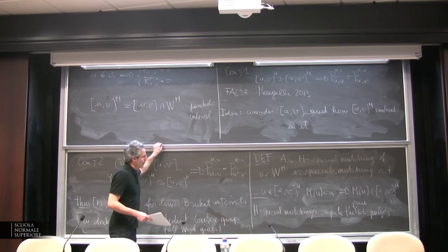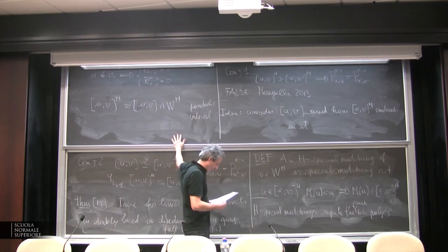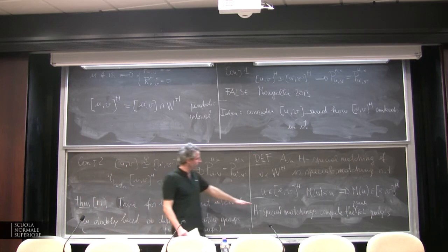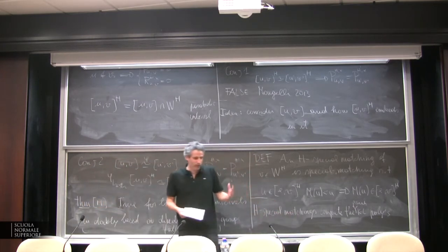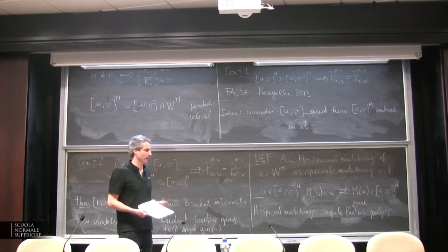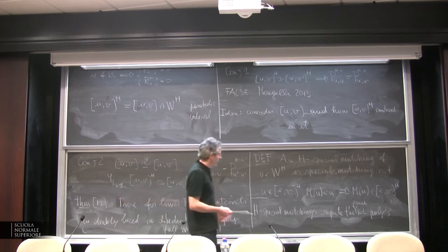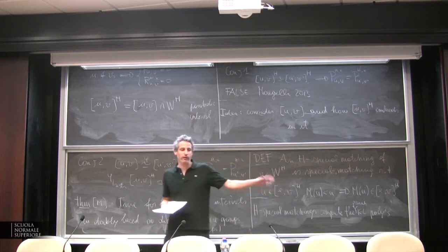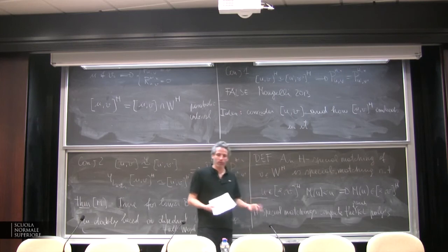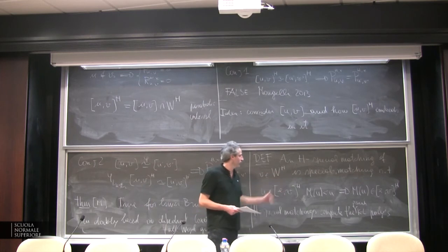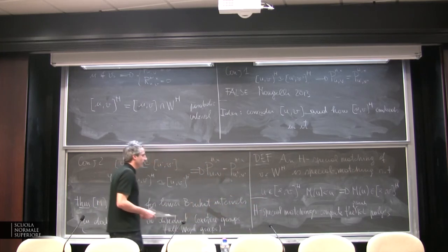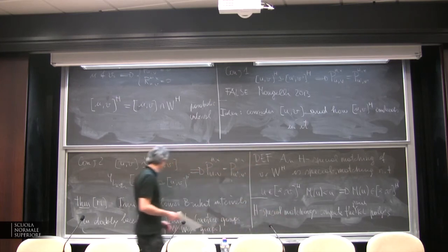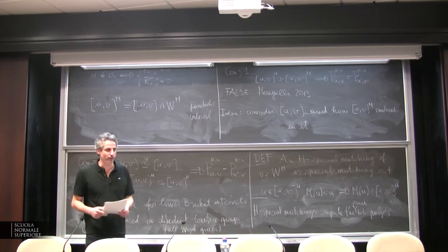To prove this result, we need some algebraic properties of special matchings. Special matchings are poset-theoretic objects — you can define them in any poset — but special matchings of a Coxeter group, which has an algebraic structure, have some additional algebraic properties. Paradoxically, to prove that the algebraic structure is not needed to compute the parabolic polynomials, you have to use the algebraic properties of special matchings. Perhaps if we find other algebraic properties of special matchings, we can prove this for all Coxeter groups.